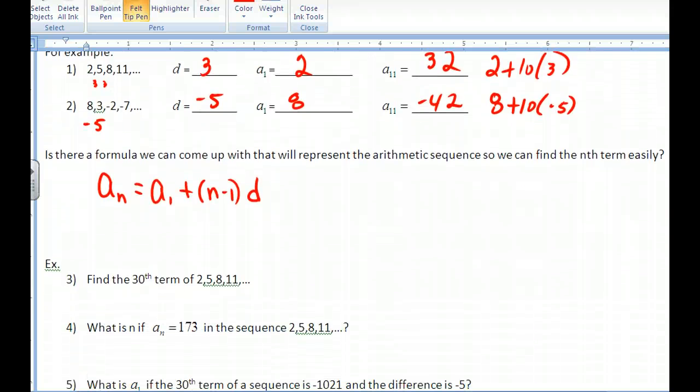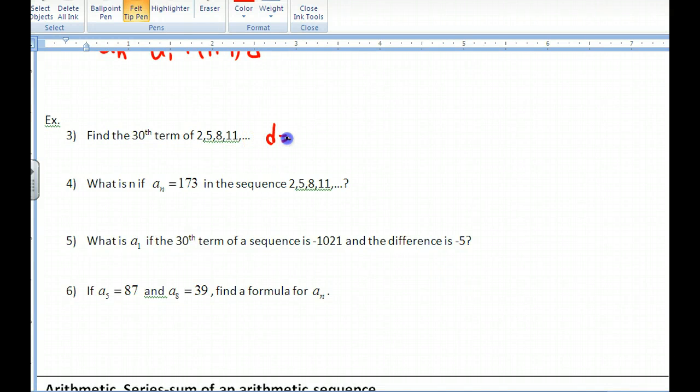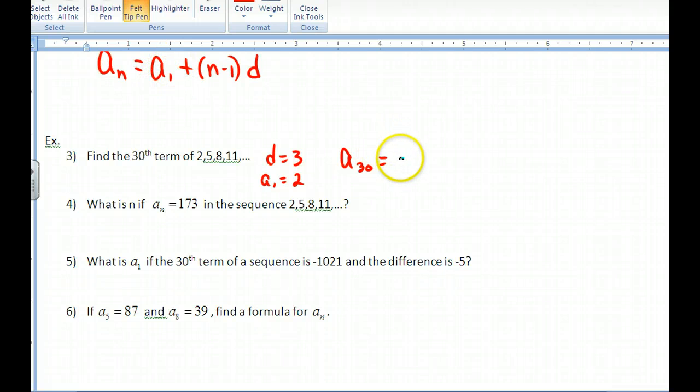For example, find the 30th term of this sequence. Once again, we've identified the difference, which would be 3, and my a sub 1, which would be 2. So if I want to find a sub 30, that is going to be equal to, using this formula, it's going to be the first term, 2 plus n minus 1, n being 30, so this would be 30 minus 1, times my difference, which is 3. And if you crank that out, you can figure that one out on your calculator.